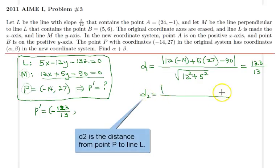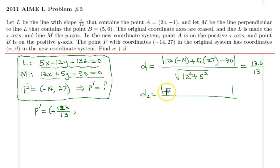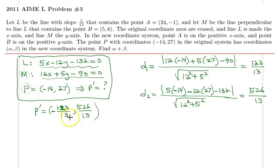And the second coordinate will be similar, so D2 will be equal to the absolute value of the equation will be this one up here. So 5 times negative 14 minus 12 times 27, minus 132, all divided by the square root of, again, 12 squared plus 5 squared. This one will come out as 526 over 13. So that's the coordinates under the new coordinate system.